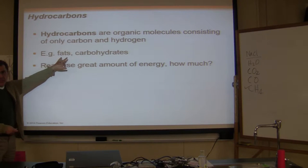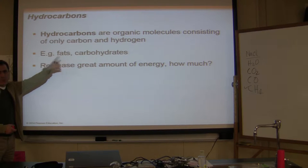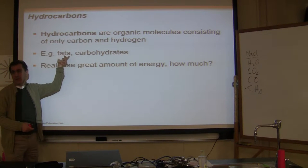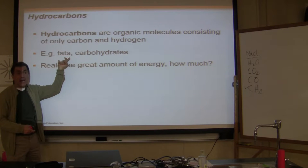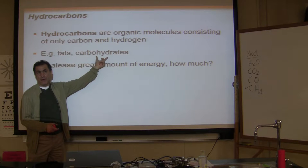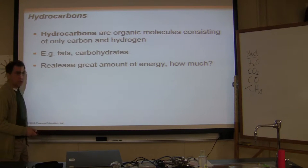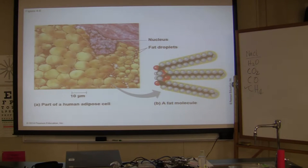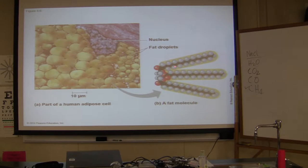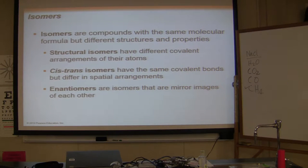One gram of fat has nine calories. One gram of carbohydrates has four calories — those are numbers I'm hoping you know. This is a picture of fat molecules showing what they actually look like, and we'll talk about all of that in a minute.